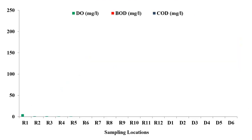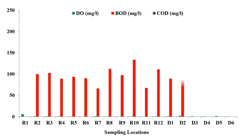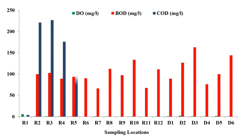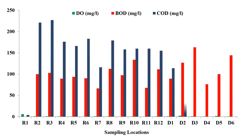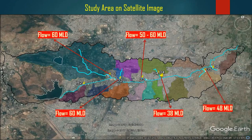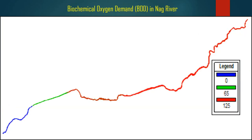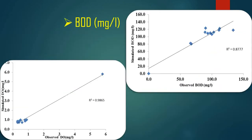The screen displays the levels of dissolved oxygen (DO), biochemical oxygen demand (BOD), and chemical oxygen demand (COD) at the identified sampling locations. The screen also shows the quantity of sewage coming from the 6 major drains along Nag River, the spatial variation of dissolved oxygen and BOD in the present scenario, and the validation of observed versus simulated values of DO and BOD.